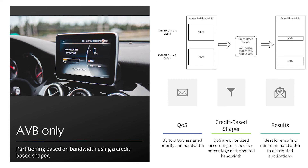After that, we combine credit shaping and strict priority. The credit shaping traffic gets the highest priority to make sure its bandwidth allocation is met, and then we can see that the remaining bandwidth is filled with strict priority traffic.